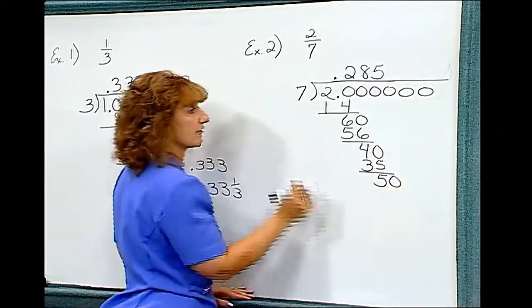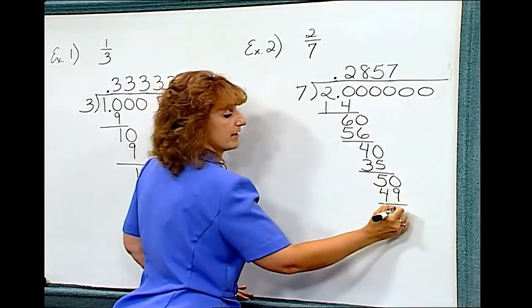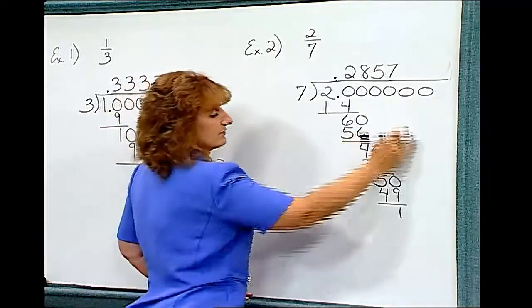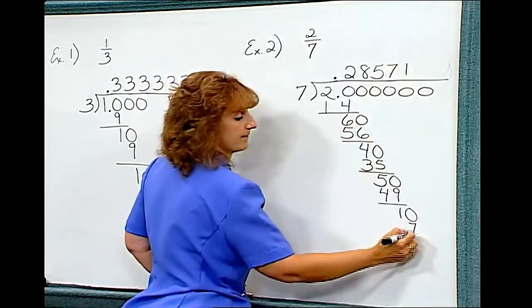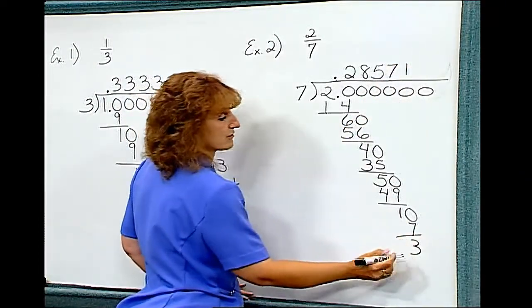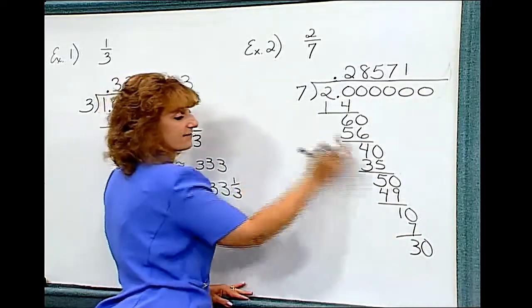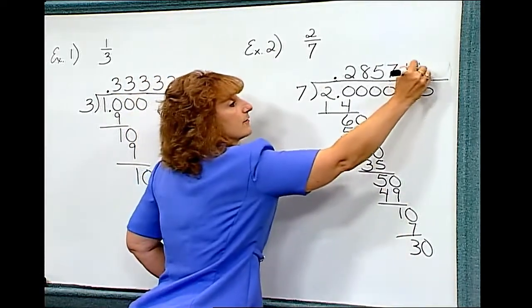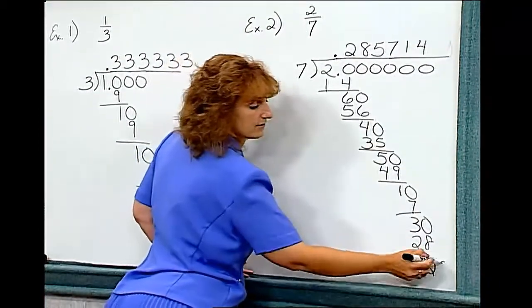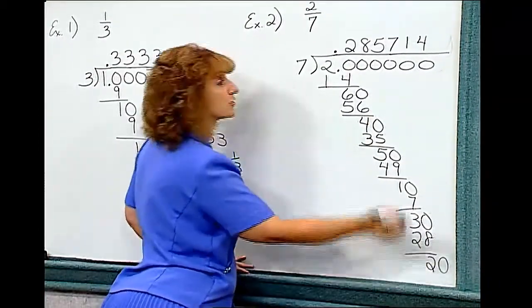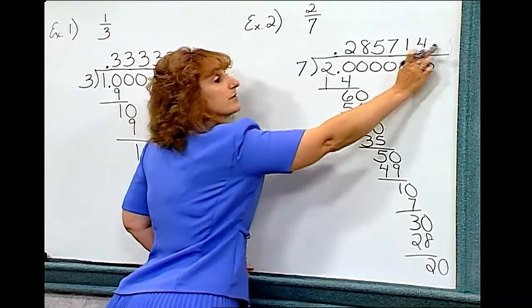I bring down the zero. Seven goes into fifty seven times. I get a remainder of one. I haven't had that remainder yet, so I'm going to bring down another zero. Seven goes into ten one time. I have a remainder of three. I bring down another zero. Seven goes into thirty four times. I get a remainder of two. And if I were to bring down another zero, I'm back to the twenty that I started with, and that's my key to tell me that this number is going to repeat again.